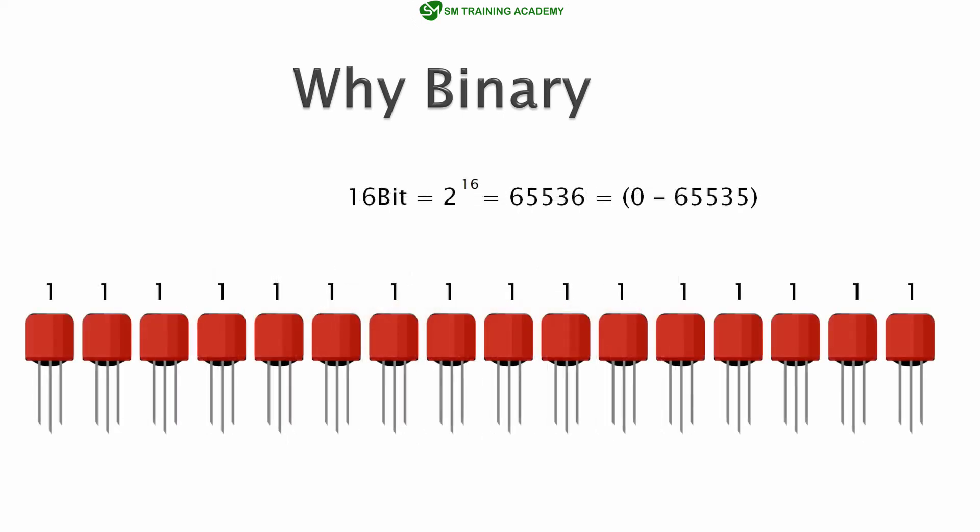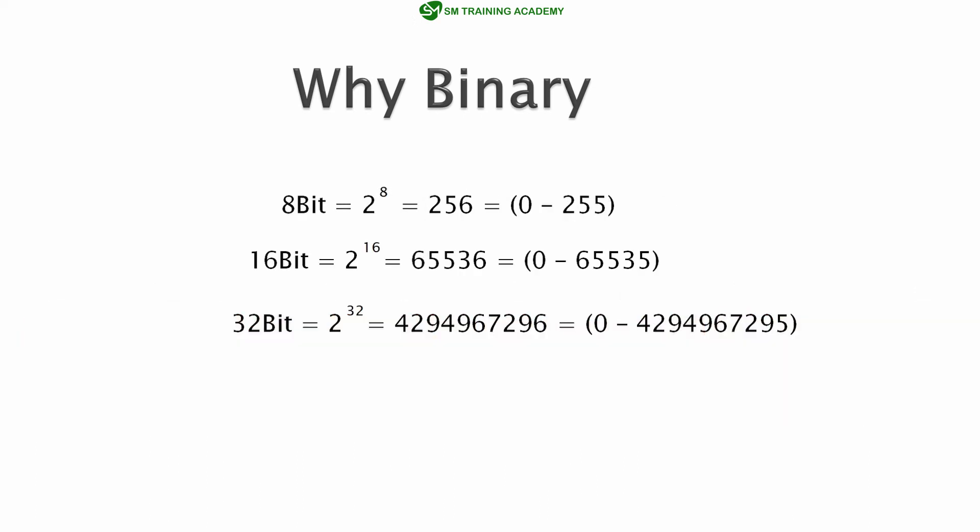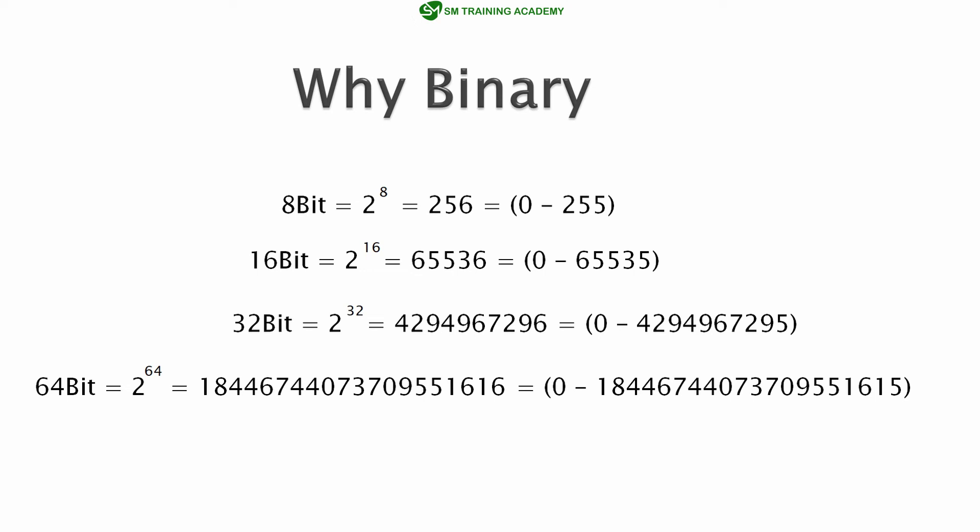A 16-bit computer has 16 transistors clubbed together, and can store numbers between 0 and 65535. If all transistors are on, the number is 65535 — that is the maximum, and the minimum is 0. A 32-bit computer can store values up to 2 to the power 32, meaning a maximum value of 4,294,967,295 and a minimum of 0. A 64-bit computer can store a maximum number of 2 to the power 64, with a minimum of 0.